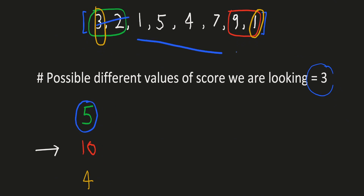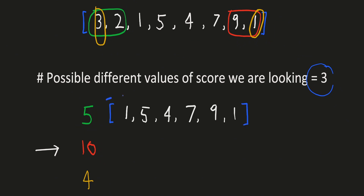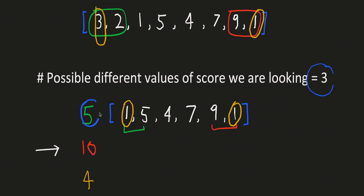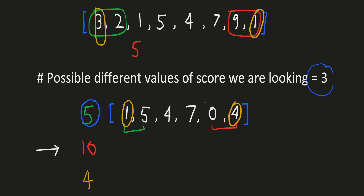Let's solve the problem when we choose a score of 5 by deleting the first two elements. In that case, we won't have those first two elements and we have to look for all pairs from the third element onwards — we can treat this as a new subproblem looking for a score of 5 in this sub-array. For this subproblem, neither of the three possible pairs sums to 5 anymore, so the result will be 1, since we can count at least that initial pair where the sum was 5.